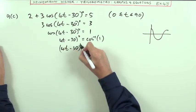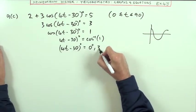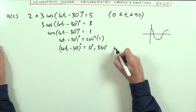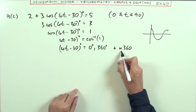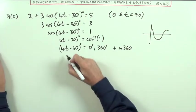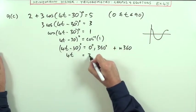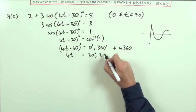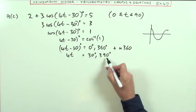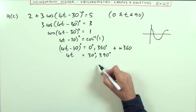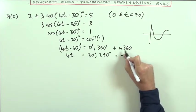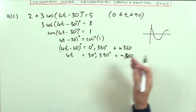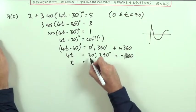So 4φ minus 30 degrees equals 0 degrees or 360, plus the general solution of n360. Taking the 30 across gives 30 and 390. That 390 could be knocked back a wavelength by taking off 360 to make it 30, or let the general solution handle it.